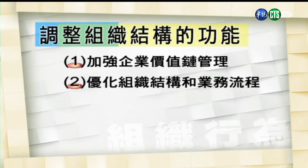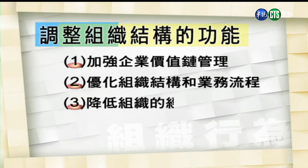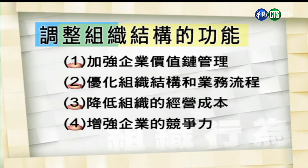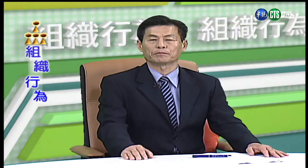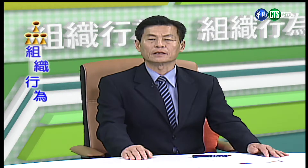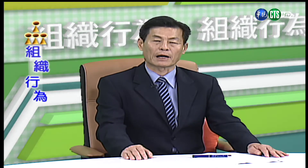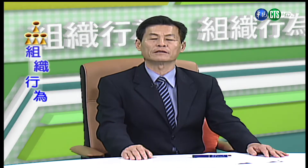为了加强企业的价值链管理，优化组织结构与业务流程，降低组织和经营成本，强化企业竞争力，企业应该定期或不定期地调整自己的组织架构，进行部门的合理划分。因此，我们把传统的组织部门划分大概分为五种方式。